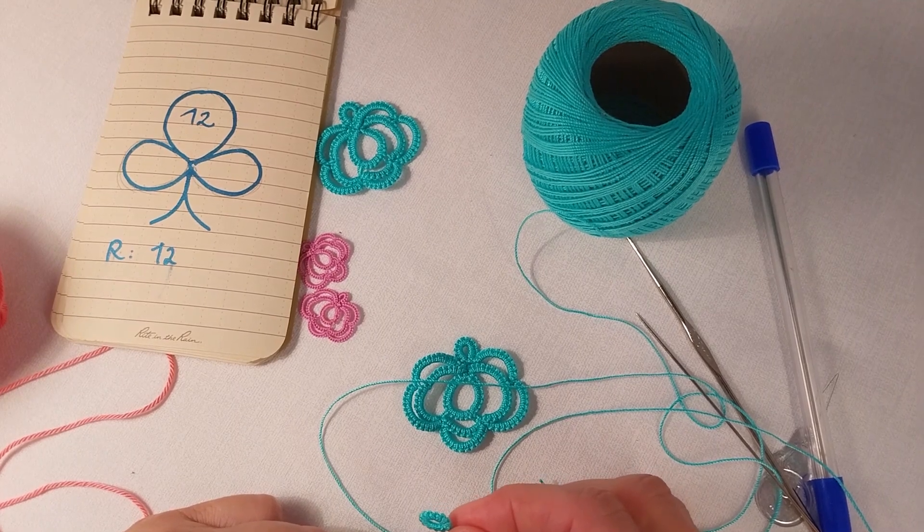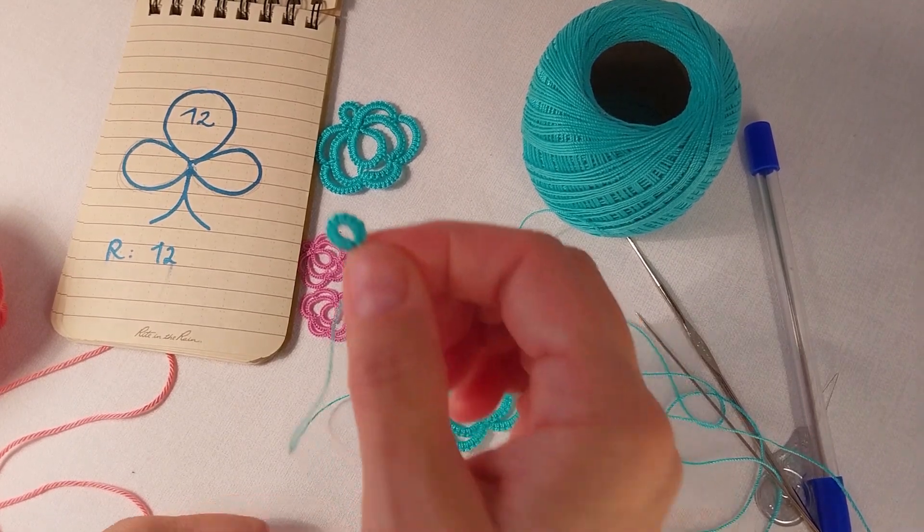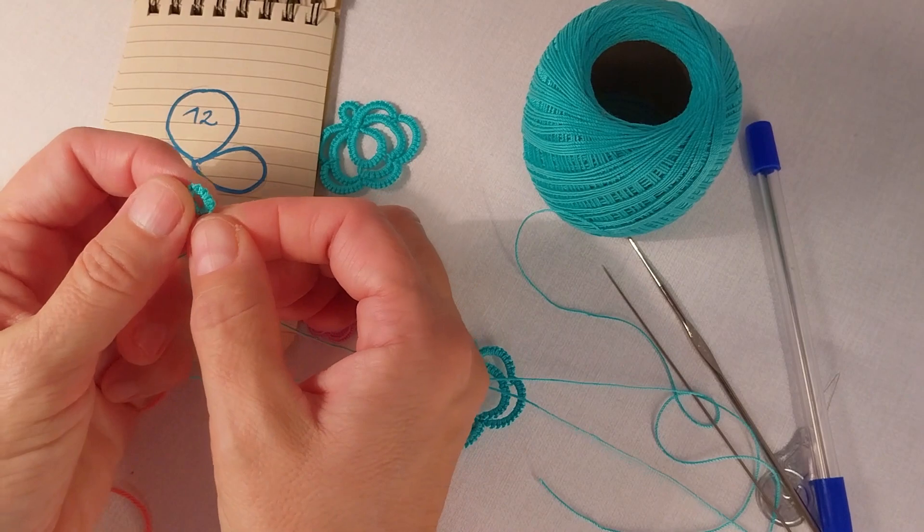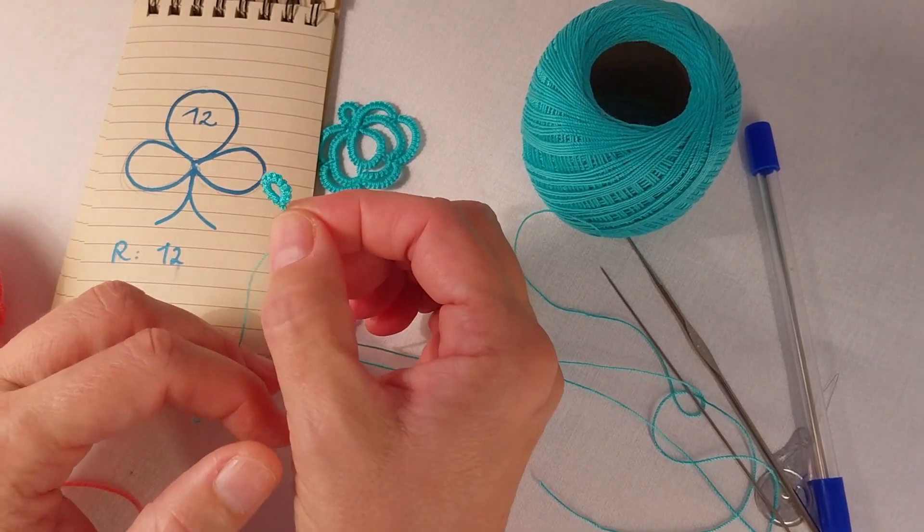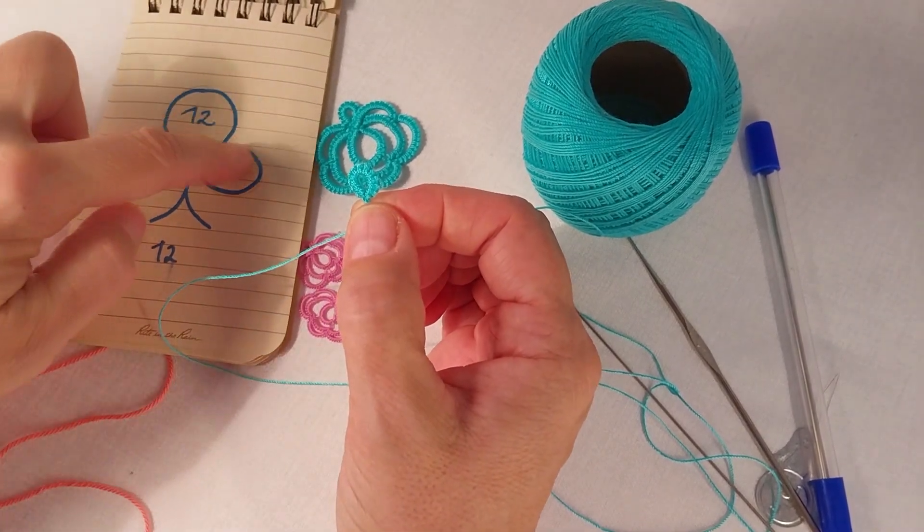Hi everyone! In this video I would like to show you how to make this ring. This ring has 12 double stitches.